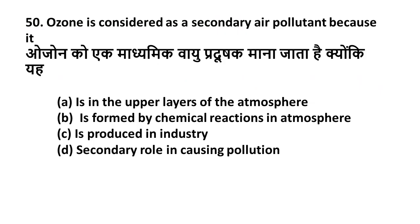Question 50: Ozone is considered a secondary air pollutant because — Option A: It is in the upper layer of the atmosphere, Option B: It is formed by chemical reactions in the atmosphere, Option C: It is produced in industry, Option D: It plays a secondary role in causing pollution. Secondary air pollutants are formed by chemical reactions in the atmosphere. So ozone is a secondary air pollutant because it is formed by chemical reactions in the atmosphere. Option B is the right answer.